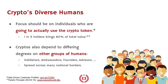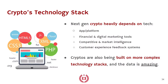Cryptos depend on other kinds of humans as well — sometimes validators with machines or those who are elected, sometimes ambassadors of the brand or token, sometimes founders or advisors. There are a lot of people involved, spread across many national borders. Similarly, cryptos are becoming more and more dependent on technology — not just the functional code of how they run, but how you interact with it: the app, the platform, the UI, the UX. Financial and digital marketing tools help the crypto spread the word and understand how people are engaging with it. There's competitive and market intelligence available, customer experience feedback possible. The next generation of cryptos will be even more technologically savvy, and the data coming from this is amazing.